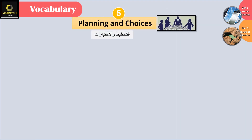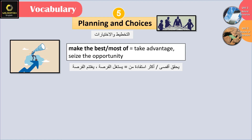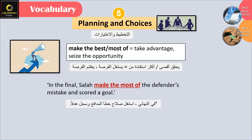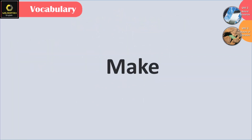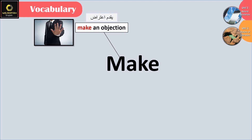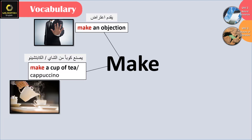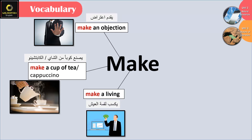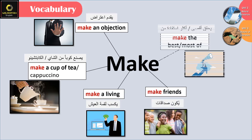Number five: planning and choices. We say 'make the best of' or 'make the most of' — it means to take advantage or seize the opportunity. For example: 'In the final, Salah made the most of the defender's mistake and scored a goal.' So with make we have: make an objection, make a cup of tea, make a living, make friends, make the best or most of.